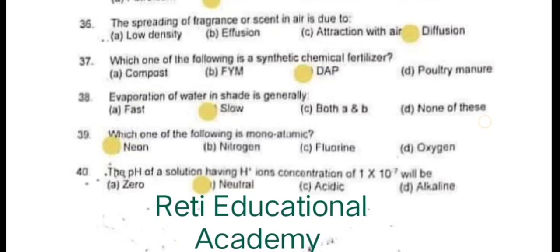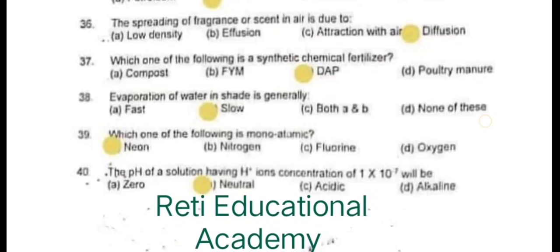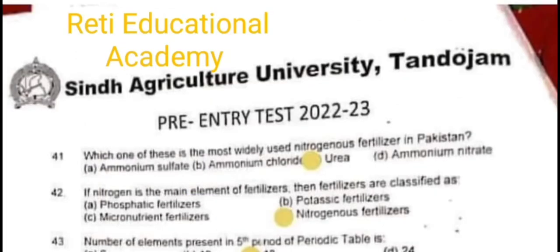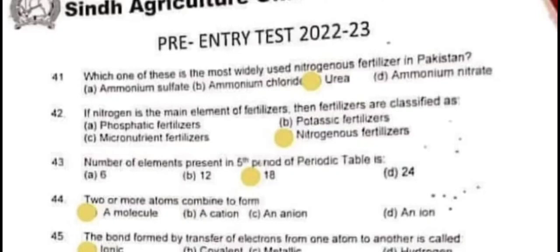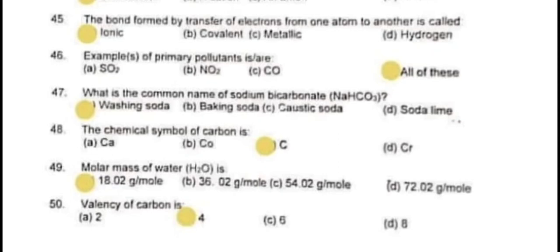Question 39: Which one of the following is monoatomic? The correct answer is A – Neon. Question 40: The pH of a solution having H+ ion concentration of 1×10⁻⁷ will be neutral. Question 41: Which one of these is the most widely used nitrogenous fertilizer in Pakistan? The correct answer is C – Urea. Question 42: If nitrogen is the main element of fertilizers, then fertilizers are classified as nitrogenous fertilizers. Question 43: Number of elements present in the 5th period of the periodic table is 18. Question 44: Two or more atoms combine to form a molecule. Question 45: The bond formed by transfer of electrons from one atom to another is called Ionic.